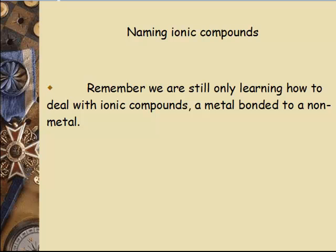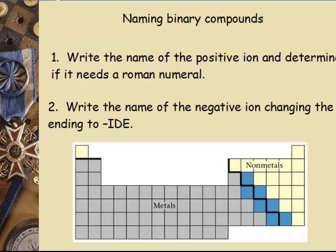Alright, so now we're going to do the opposite of what we've been doing. We are going to take the formula that we see and come up with a name. So we've been given a name and been able to write the formula; now we're going to do the opposite. We are still naming ionic compounds — a metal bonded to a non-metal, or a metal bonded to a polyatomic ion, one positive and one negative.